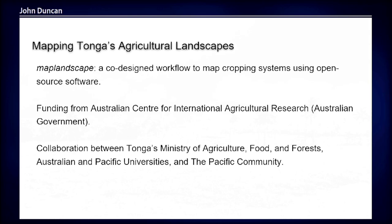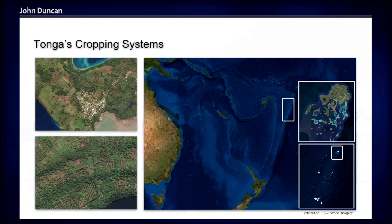The Ministry of Agriculture were the primary end users of this workflow, along with universities in Australia and the Pacific. A quick bit of geography: Tonga is a country in the South Pacific where the inhabited islands span over several hundred kilometres, and that's really where most of the cultivation occurs.